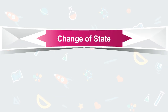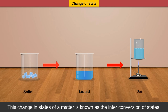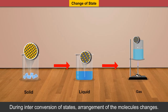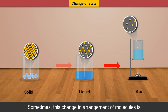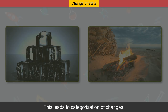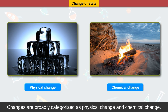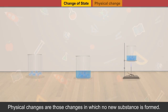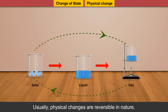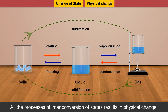Matter can change its state. A solid may convert into liquid and a liquid may further convert to gas. This change in states of matter is known as the interconversion of states. During interconversion of states, arrangement of the molecule changes. Sometimes this change in arrangement of molecules is reversible in nature while sometimes it is irreversible in nature. This leads to categorization of changes. Changes are broadly categorized as physical change and chemical change.